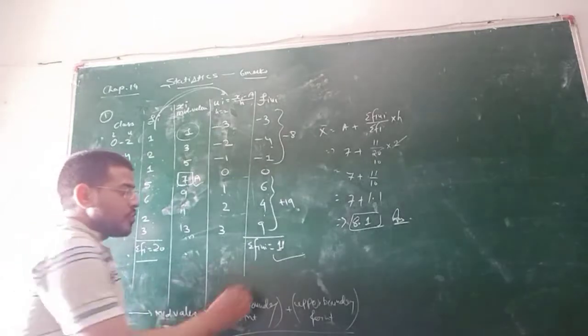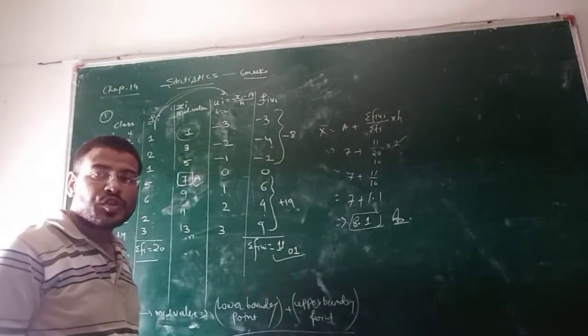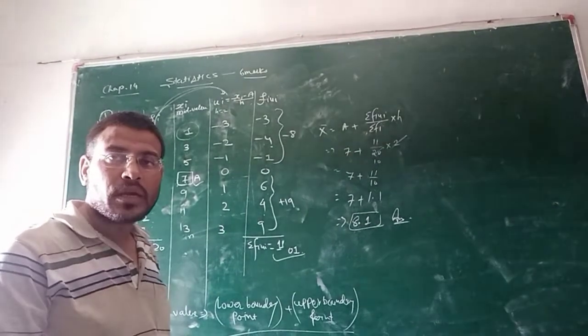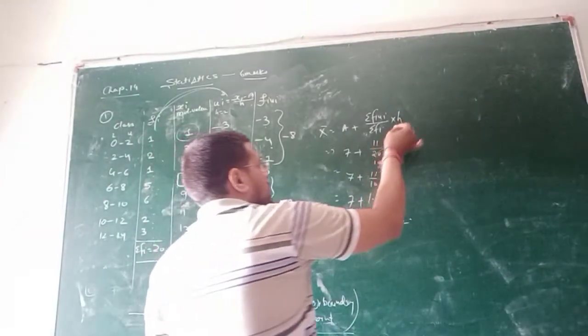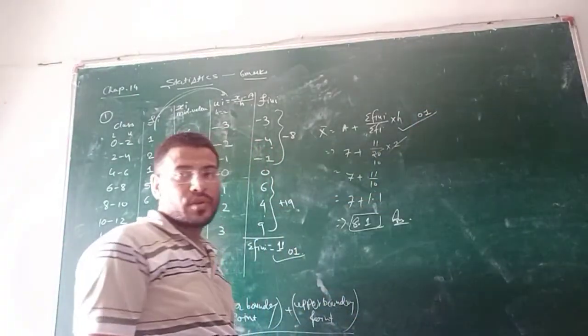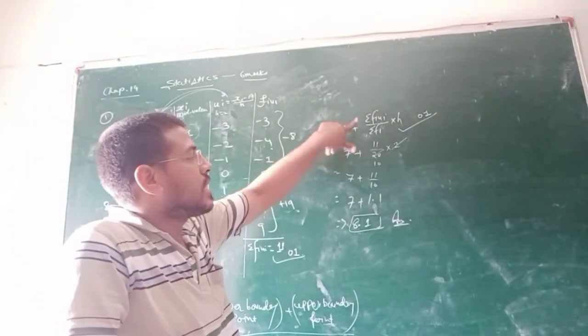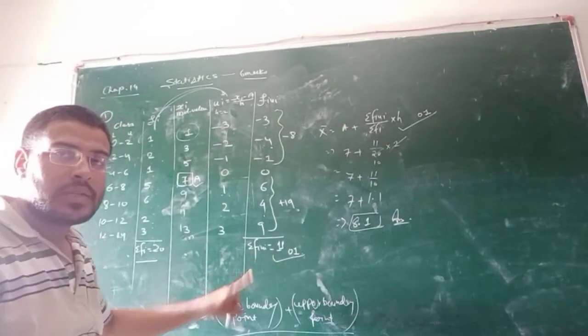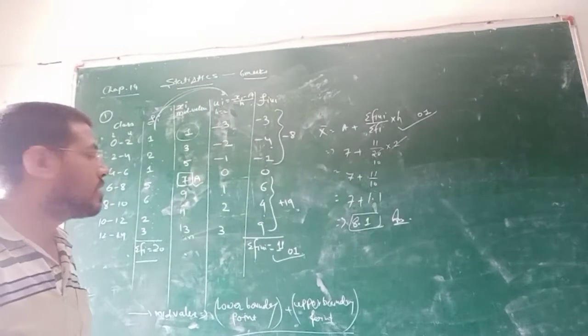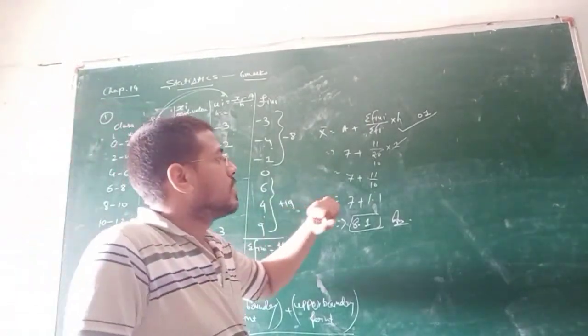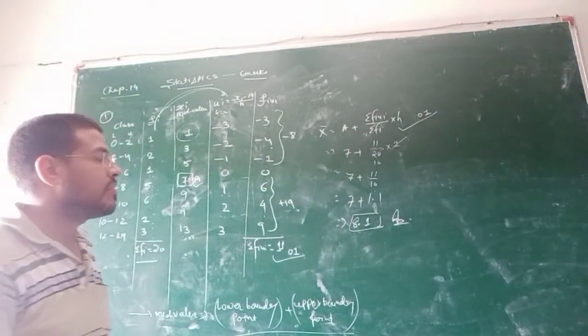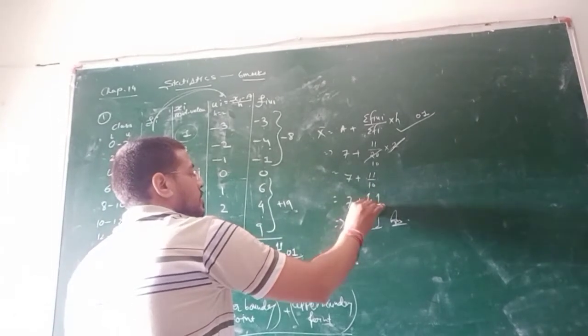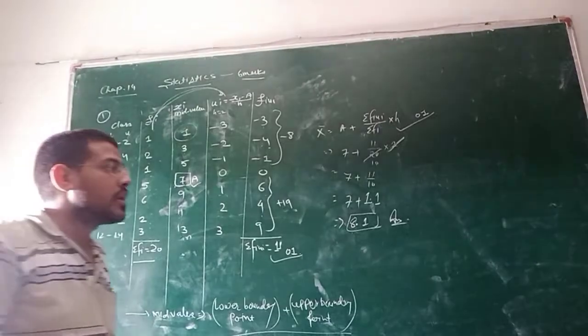Now, if table is done, this is worth your one mark. This is a question of 4 marks. Then, if table will give you only one mark, if your table is right. On the very second step, this formula, if your formula is right, one mark will also be given. Now, x bar is equal to a plus fi ui divided by sigma fi into h, where a is equal to 7. Sigma fi ui we have calculated, that is 11, and divide by sigma fi, that is 20, into h is equal to 2. Divide the value, 2 tens are 20, so 11 by 10, it will be 1.1. Right? So, 7 plus 1.1, it will be 8.1.